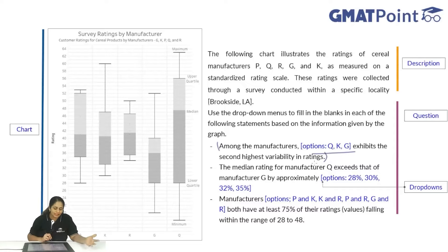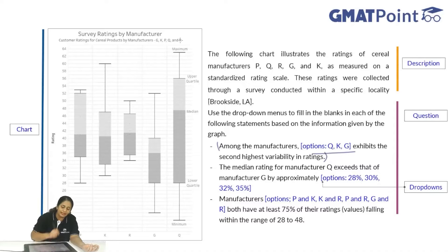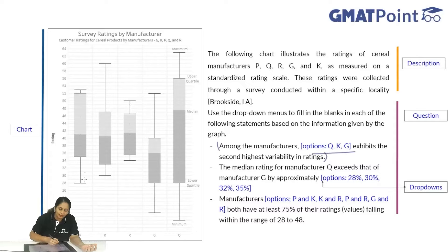Let us first take a look at the chart. The chart looks very weird. There is a rating scale on the y-axis, with different ratings from 16 to 64. This is a survey of ratings by manufacturer. We have different manufacturers P, K, R, G and Q. This is customer ratings for cereal products by manufacturers G, K, P, Q and R.